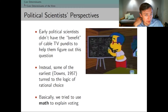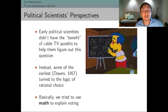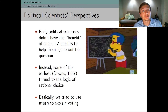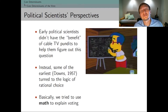The rational choice perspective really makes the assumption that we can predict people's behavior on the basis of simple cost-benefit calculations. We can make an assumption about what people value — what brings them the most utility — and then how those utility-maximizing calculations will lead them to choose one candidate over the other, or even choose to vote or not vote. We'll see many examples of this rational choice perspective in the weeks to come.